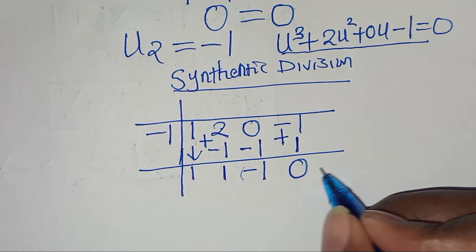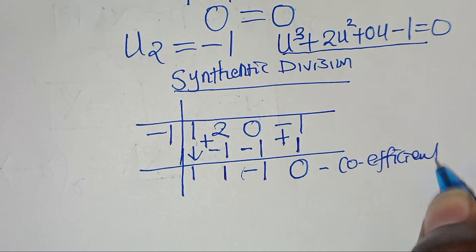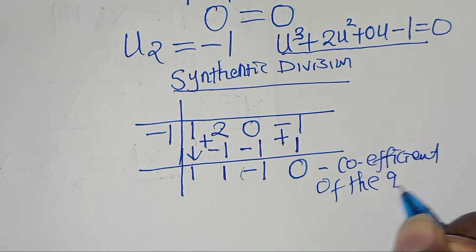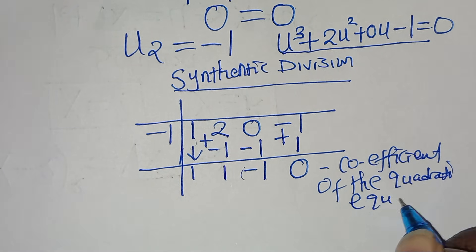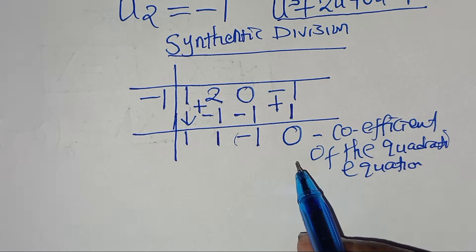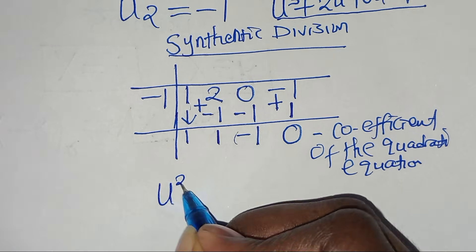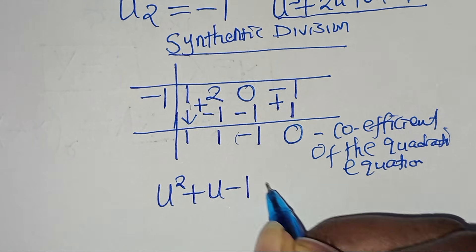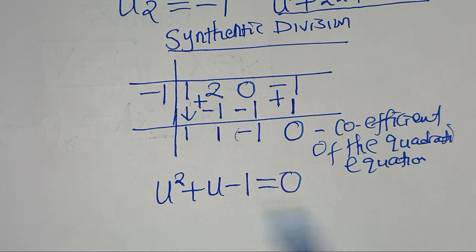These are the coefficients of the resulting quadratic equation. Given these coefficients, this means we have u squared plus u, subtract 1, this is equal to 0. This is our quadratic equation.